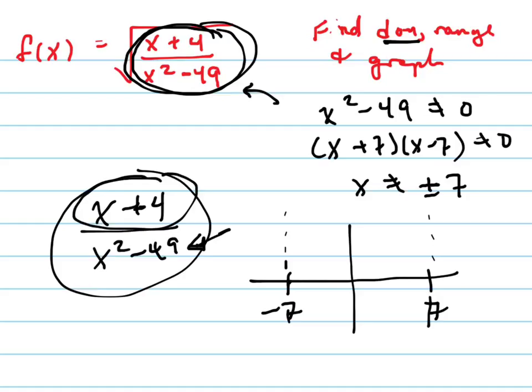This right here, negative 4 gives me, I'm sorry, that's another 0 is at negative 4. That's a 0 at negative 4. Because that's another critical point, making the numerator equal to 0 and solving that gives me another critical point. So I know that right there, it's going to be crossing the x-axis.